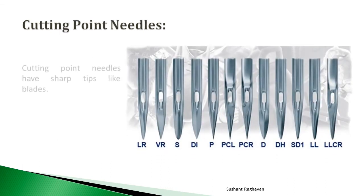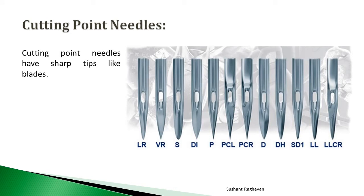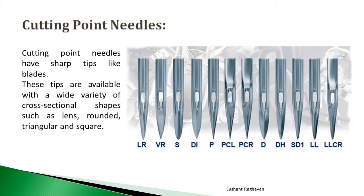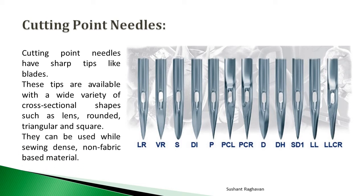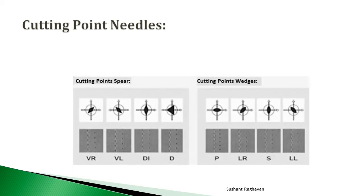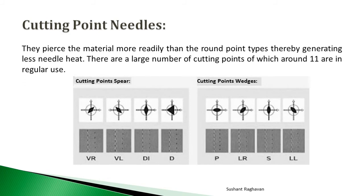Cutting point needles have sharp tips like blades. These tips are available with a wide variety of cross-sectional shapes such as lens, rounded, triangular, and square. They can be used while sewing dense non-fabric based material. Cutting point spear and cutting point wedge pierce the material more readily than round point types, thereby generating less needle heat. There are a large number of cutting points, of which around 11 are in regular use.